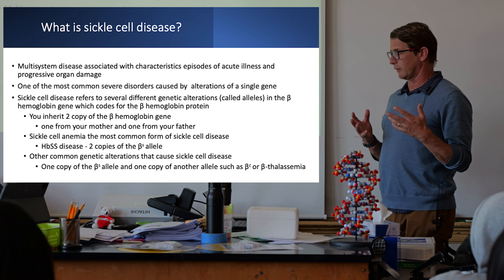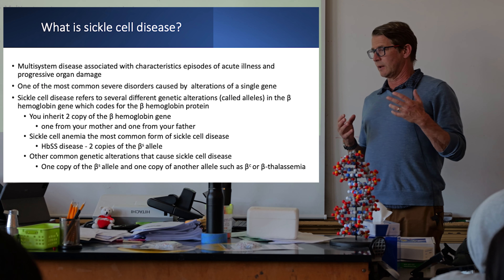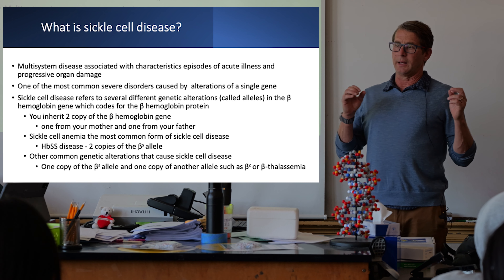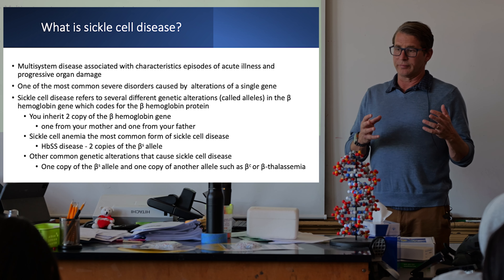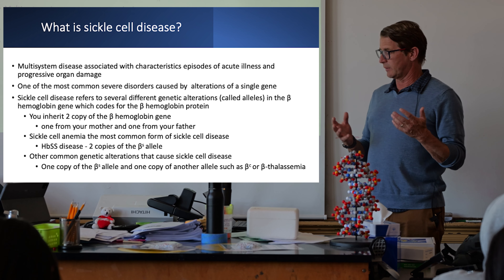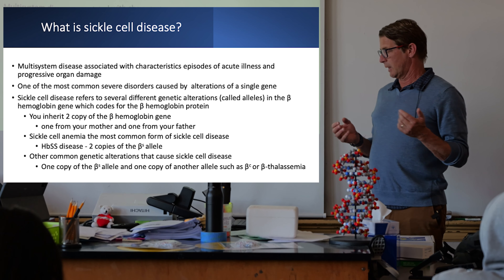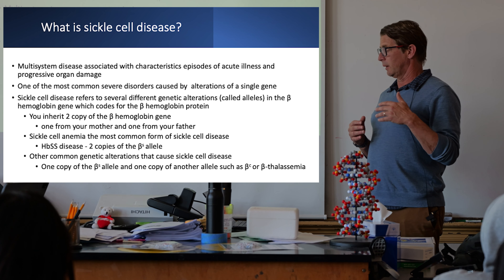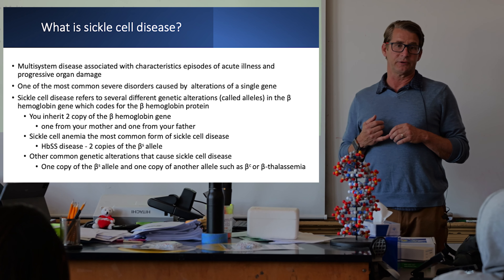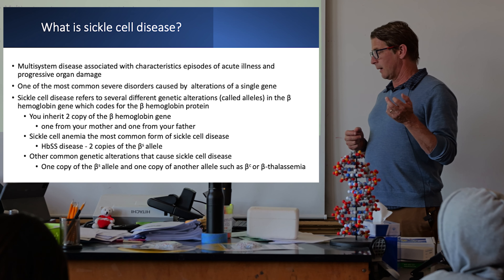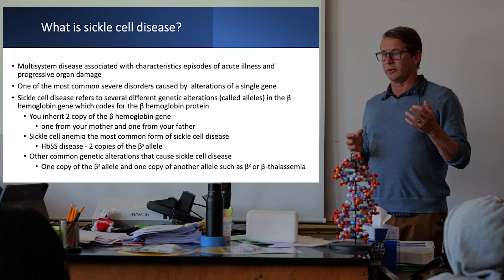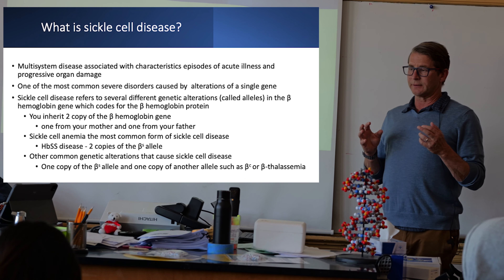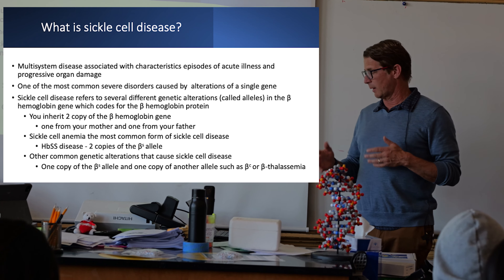So let me start with some basic definitions. Sickle cell disease is characterized clinically by a multi-system disease — meaning it affects many different parts of your body. You have both acute illnesses, where you have sudden worsening of symptoms, and also progressive organ disease. It is the most common disease caused by mutations in a single gene, or alterations in a single gene.